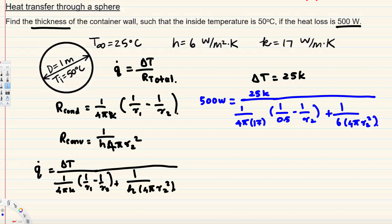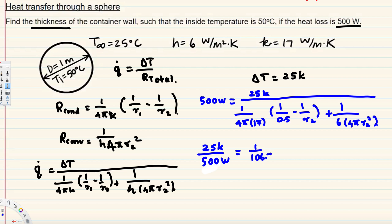Let's simplify. Bringing 500 to the other side gives us 25 over 500. Multiplying 1 over (4π times 70) with 1 over 0.5 gives 1 over 106.76, the term with r2 gives minus 1 over 230.5r2, and the convection term simplifies to 1 over (75.6 r2²).